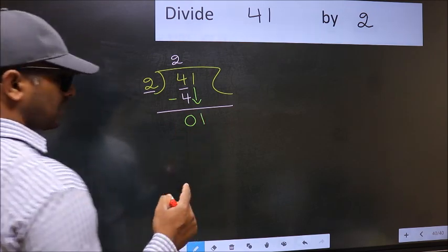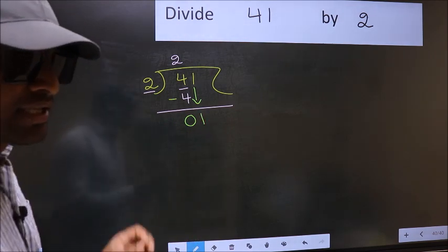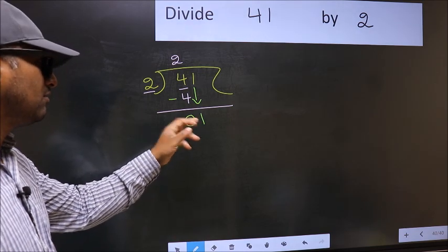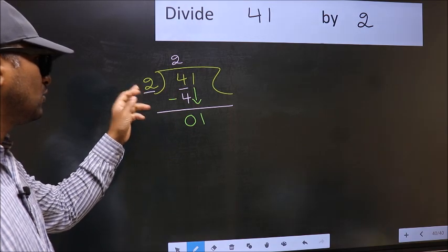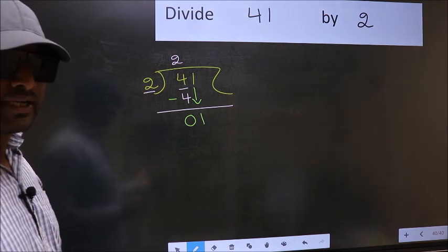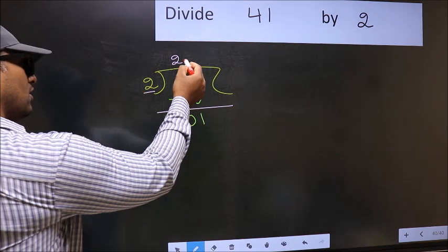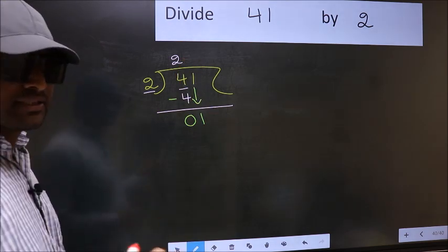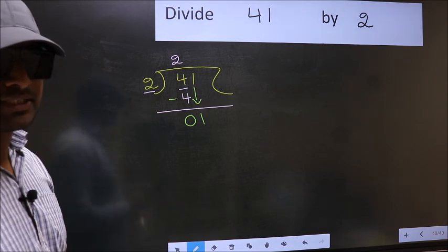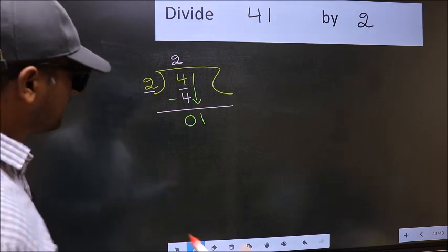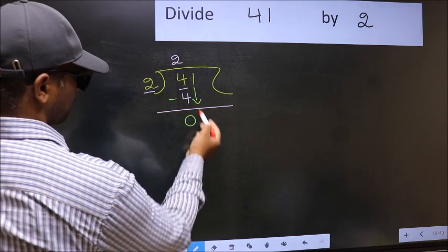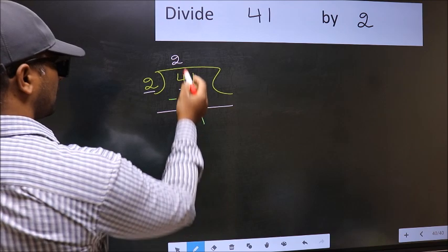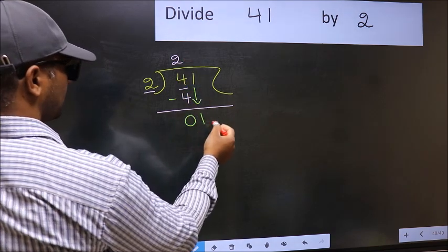After this step, the mistake happens. And the mistake is this. Here you have 1 and here 2. So what many do is they put a dot and take 0 here. Which is wrong. And why is it wrong? Just now you brought the number down. And in the same step, you want to put a dot and take 0 here.